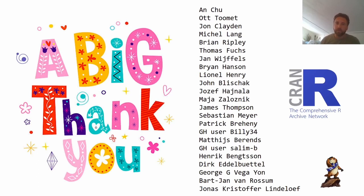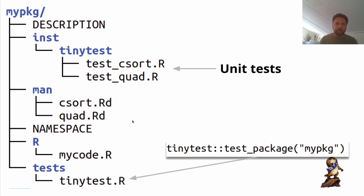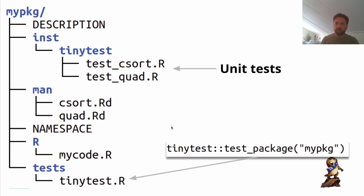Let's look at the basic setup of the package. Here's the directory infrastructure for a package called myPackage — it has all the usual elements like a description file, a namespace file, a folder with R code, and a man folder with the manual entries. To use TinyTest, you need to add two things: one file under the tests directory with one line of code saying test_package('myPackage'), which ensures all tests are run by R CMD check. The unit tests themselves sit in a folder under inst.